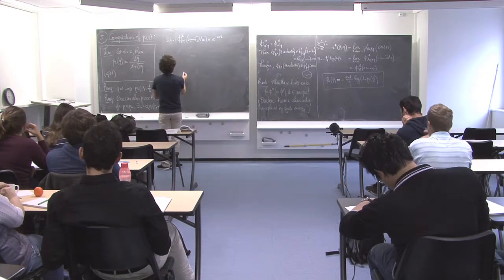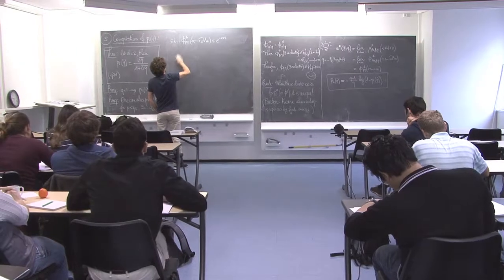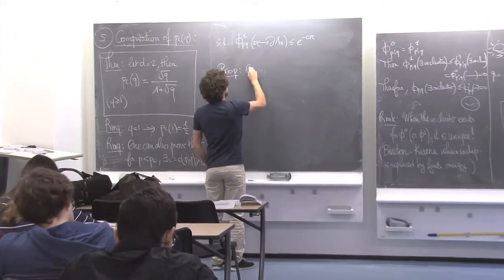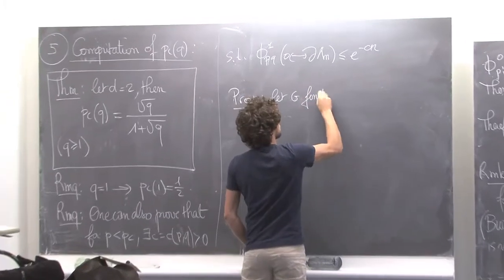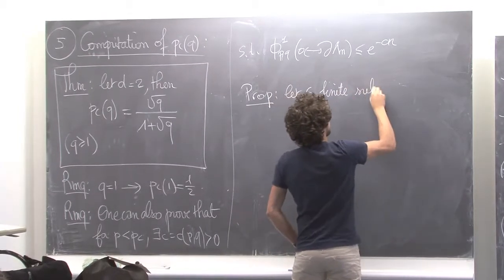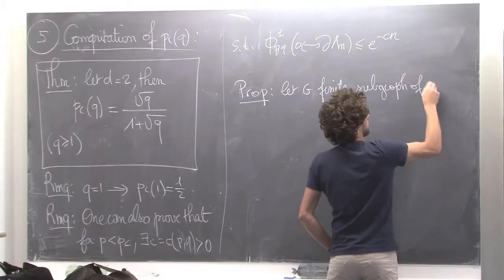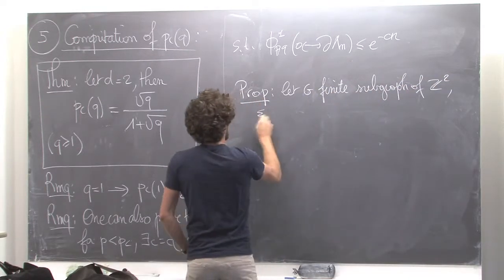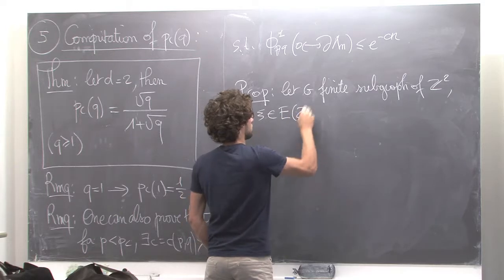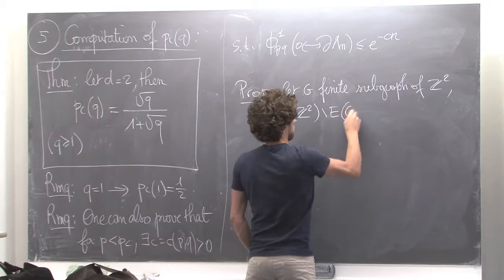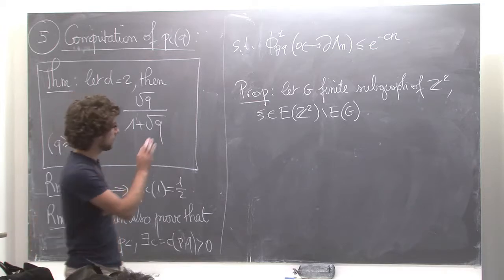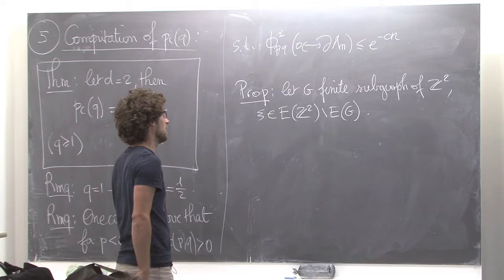So this is going to be duality. Let G be a finite subgraph of Z². And let's take psi — we have to be careful, we have boundary conditions for the random cluster model — so I'm going to take psi which is just a configuration on the edges which are not the edges of G. I'm going to state duality just for planar boundary conditions, but that's already interesting enough.